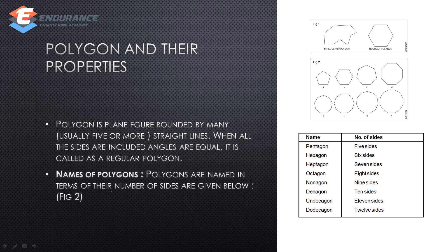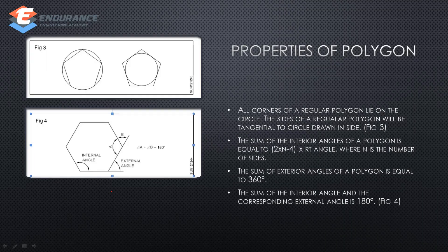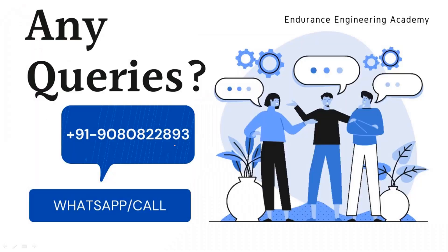11 sides is undecagon and 12 sides is duodecagon. Properties of polygons: all corners lie on a circle and are tangential. The sum of interior angles equals (2n − 4) × 90 degrees, where n is the number of sides. The sum of exterior angles is equal to 360 degrees. The sum of an interior angle and its corresponding exterior angle is 180 degrees. This completes this part of the basic engineering drawing video.